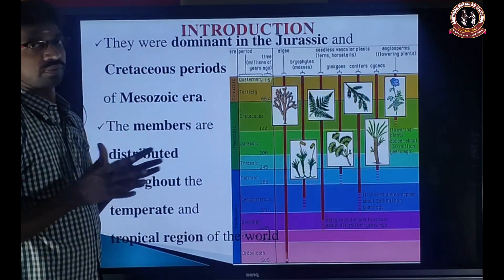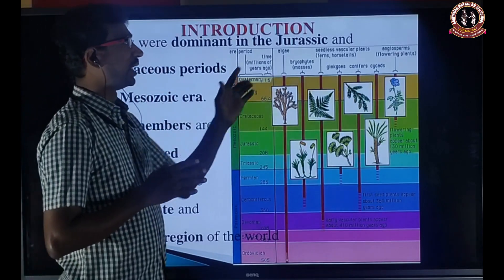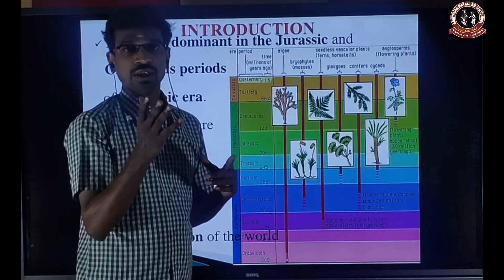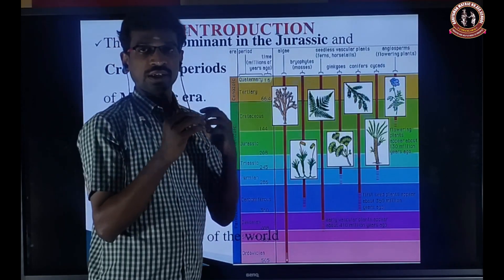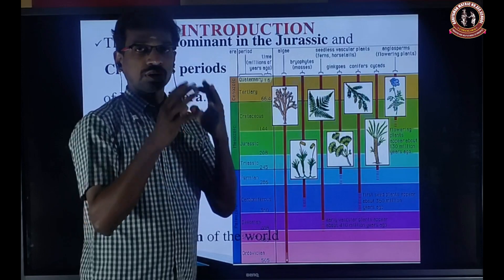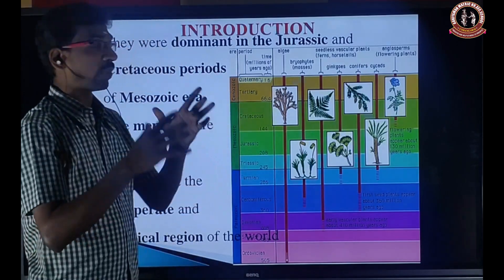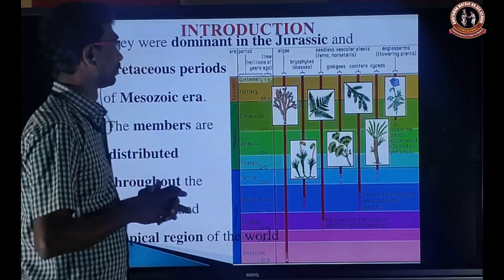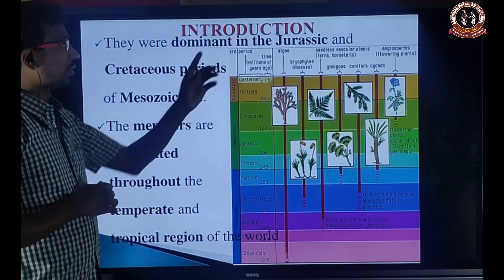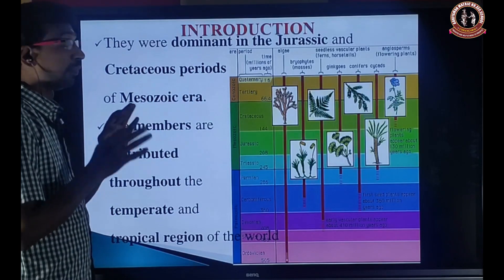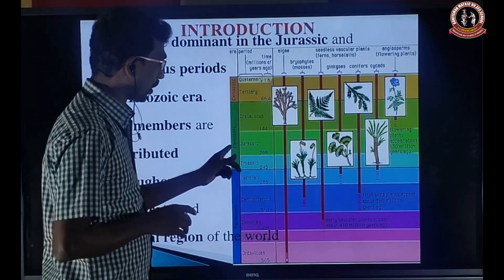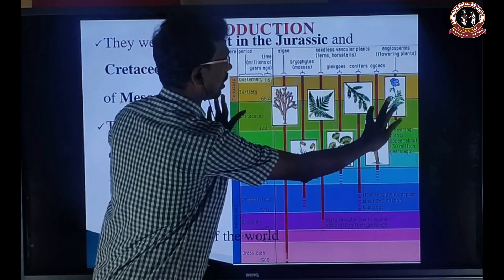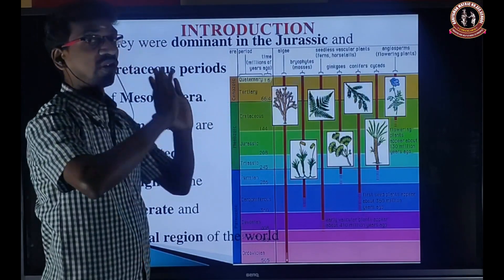Next is the origin of the gymnosperms. They were dominant in the Jurassic era, that is why I previously showed Jurassic Park. In this film, there is a full focus on Jurassic animals. At that time, gymnosperm plants were dominant everywhere in the earth. It is the Jurassic and Cretaceous period of the Mesozoic era. In this time, the gymnosperm plants were very dominant.